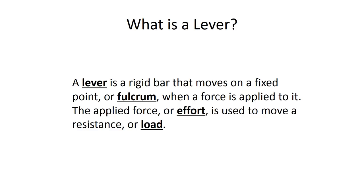The other thing we want to talk about is a little bit of muscle mechanics, or lever systems. The operation of most skeletal muscles involves the use of a lever system. A lever is a rigid bar — like a board, crowbar, or bone — that moves on a fixed point called a fulcrum. When a force is applied to it, the applied force or effort is used to move a resistance or load. In the human body, the joints are the fulcrums, the bones act as levers, and the muscles provide the effort.